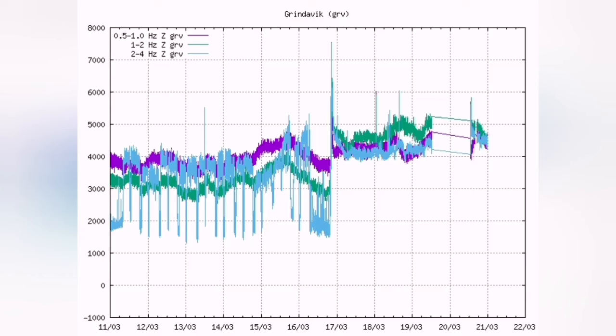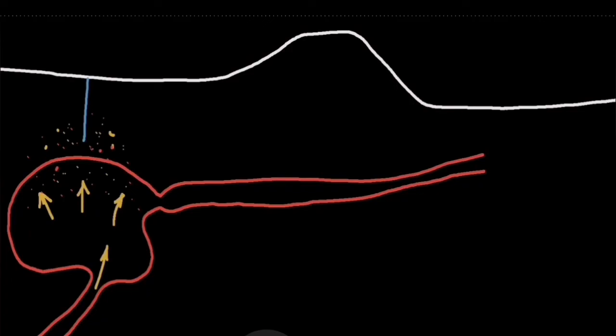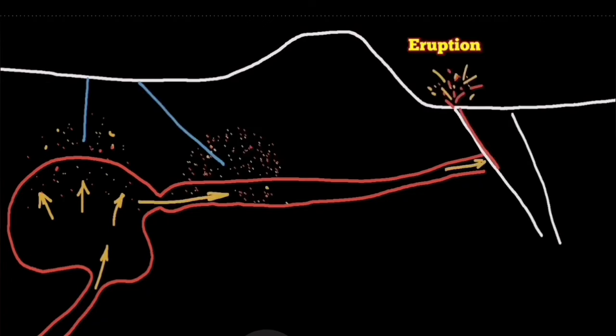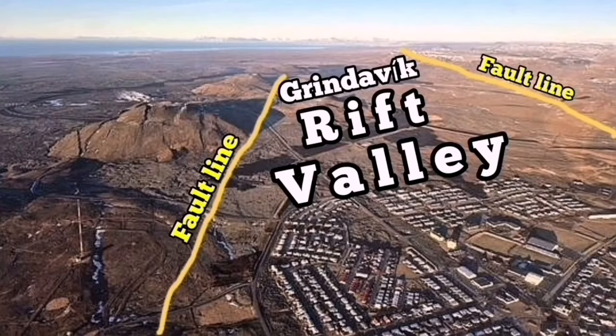The flow of magma from the source reservoir to the weakest point, which is in the Grindavik rift valley, takes at least 30 seconds. It can be more—one and a half up to two hours to rise to ground level, then we have an eruption.